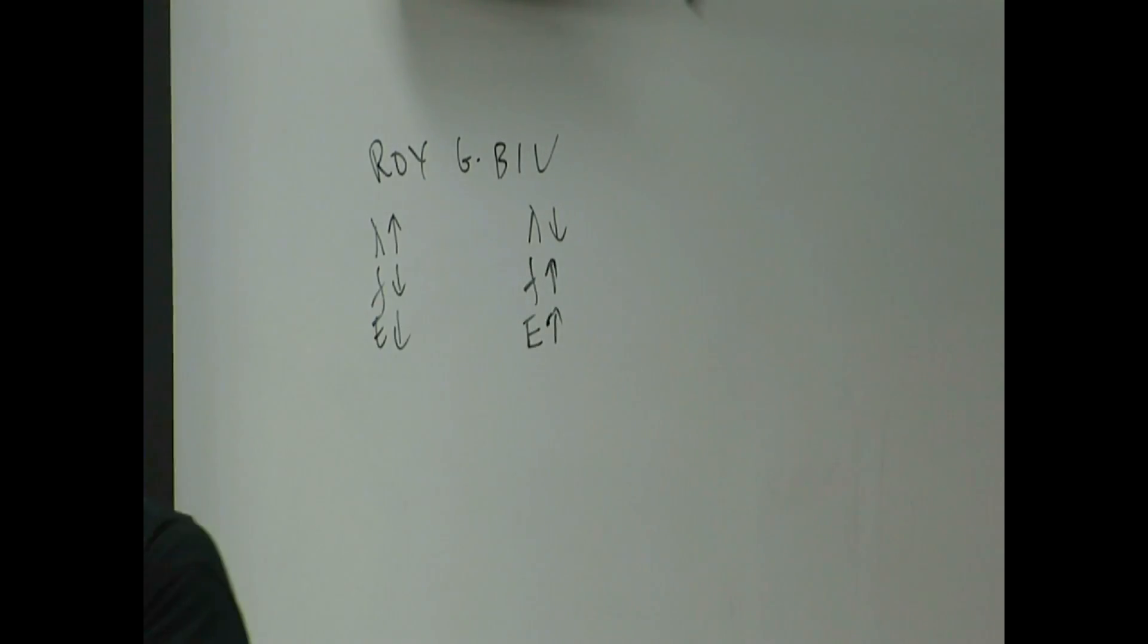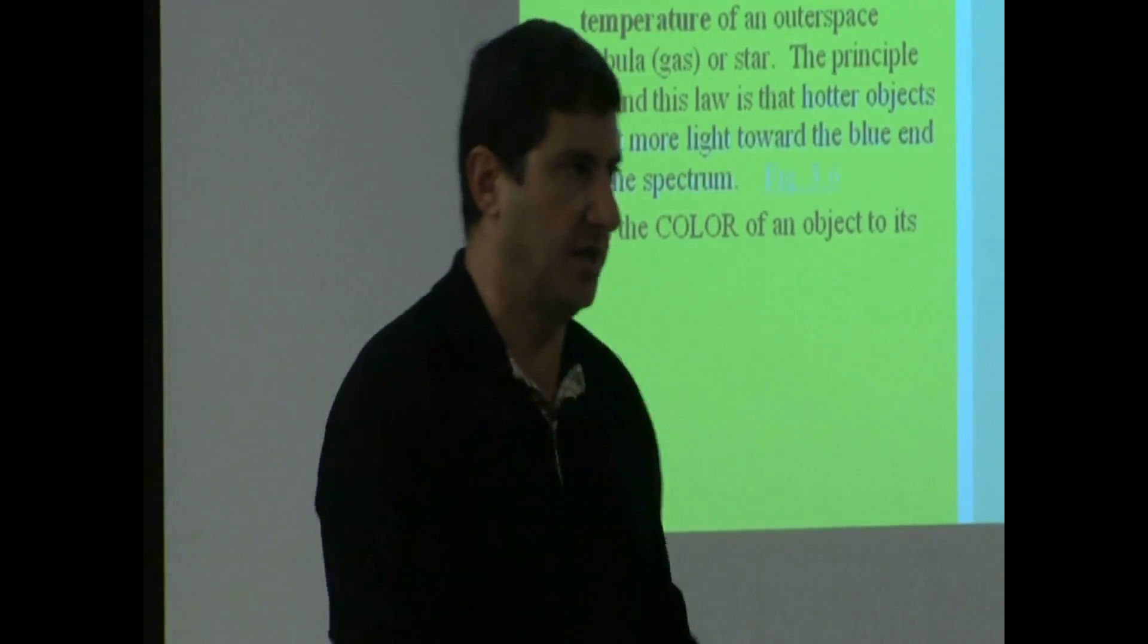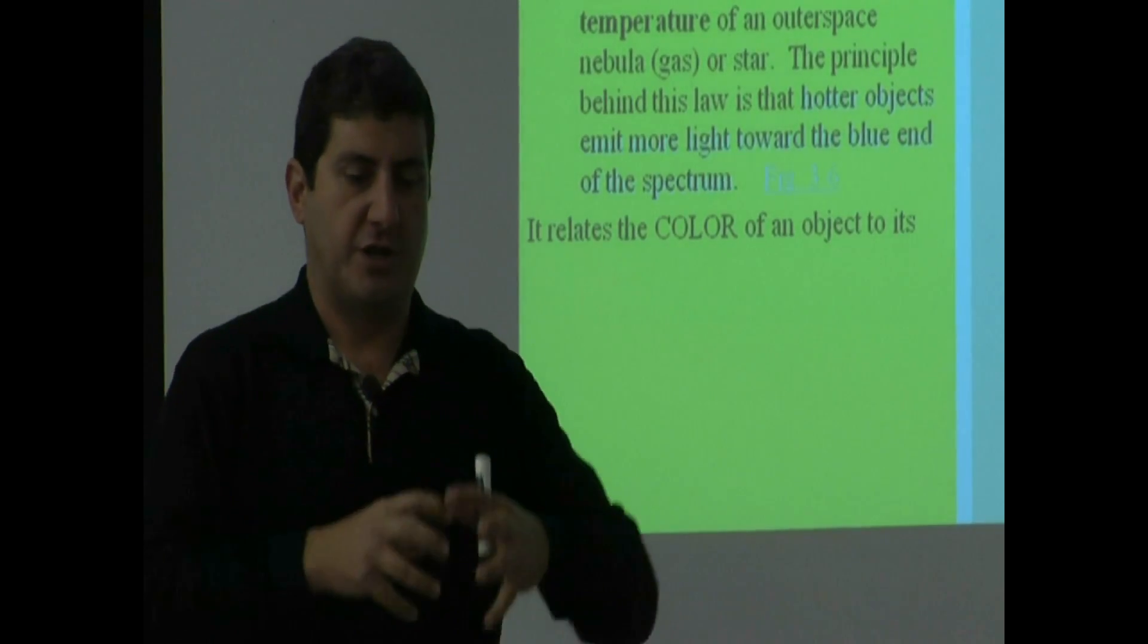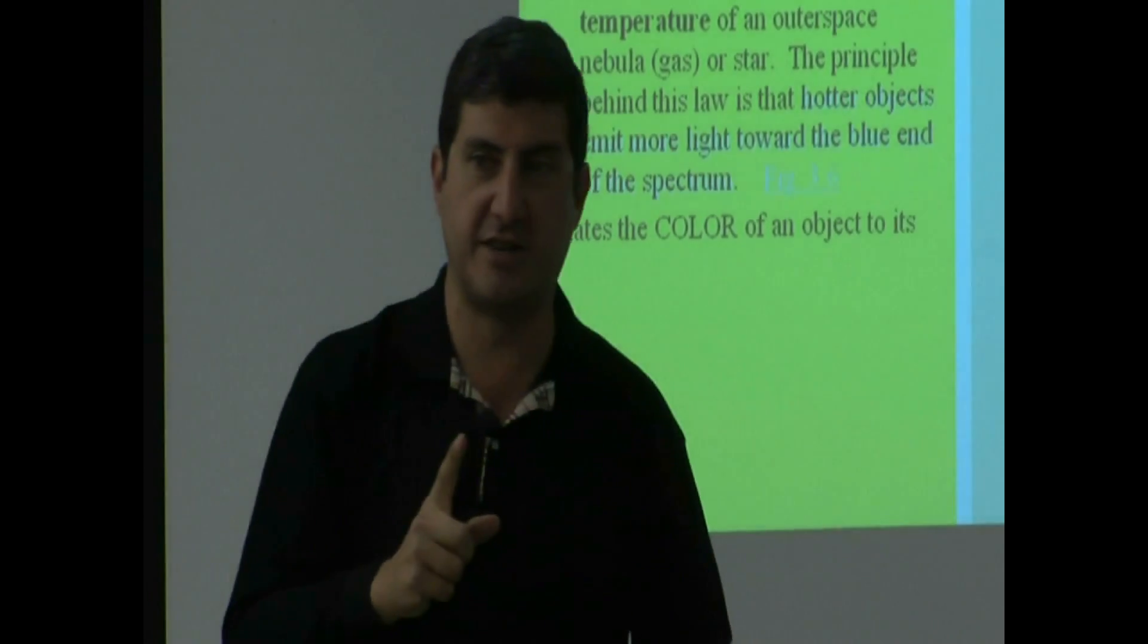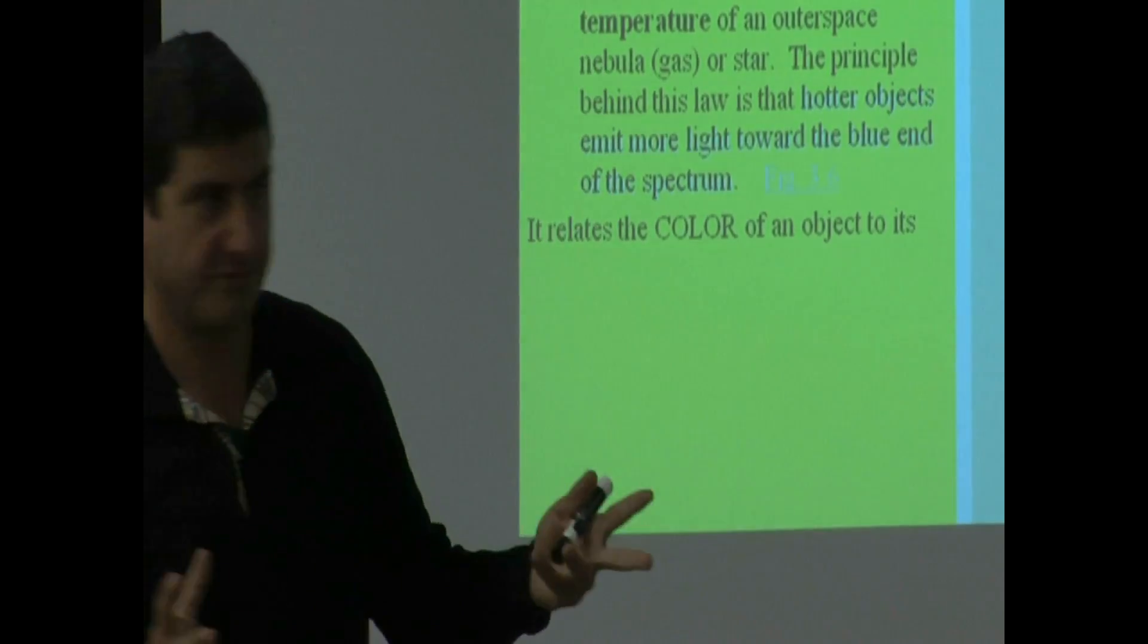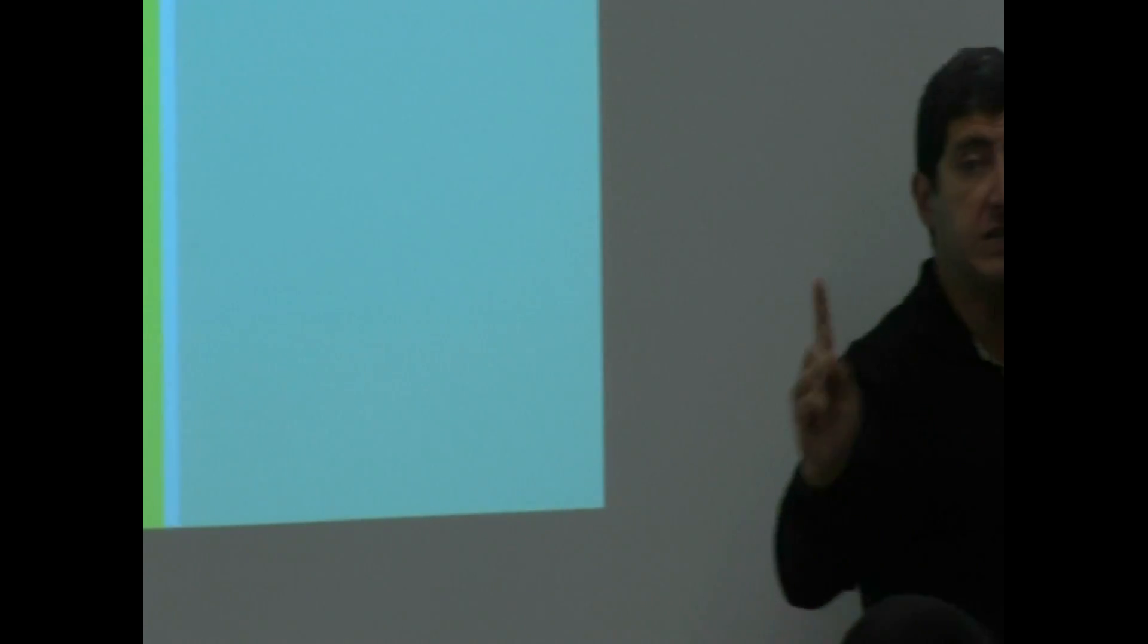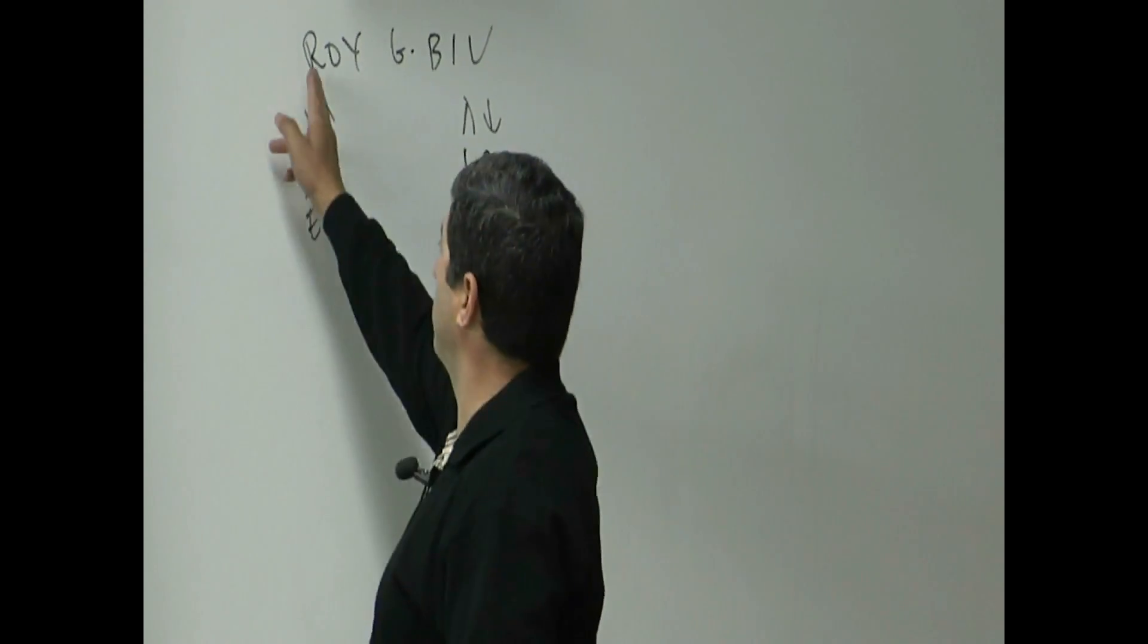For example, if I take a metal and I put it in an oven and I start heating it, I start cranking up the heat, and then it gets hot, hot, hot. What's the first visible color that it will radiate in? Naturally, before you put it in the oven, what is it radiating in? What's before red?